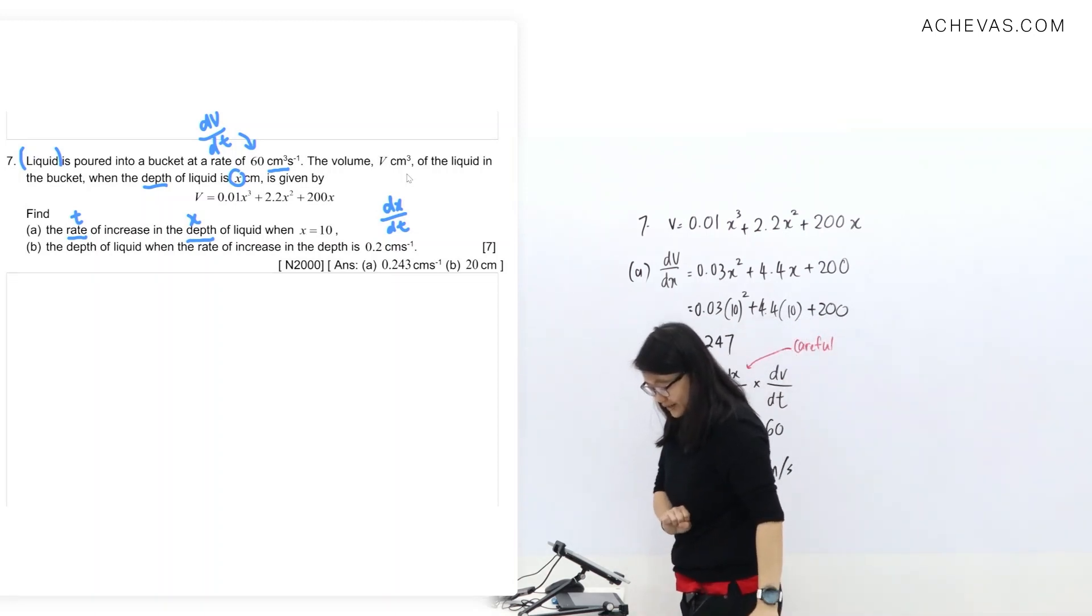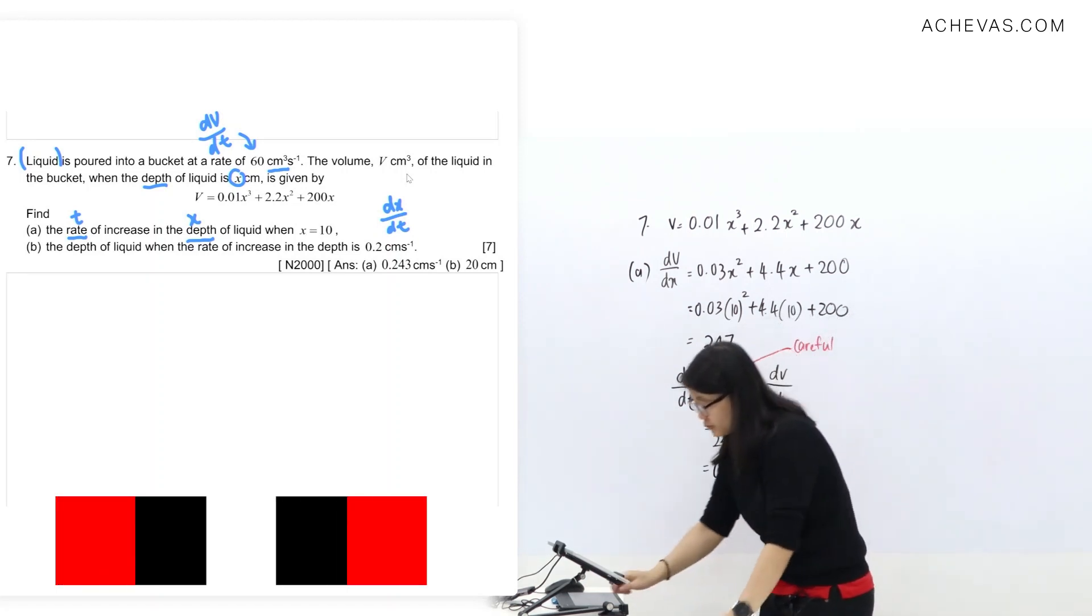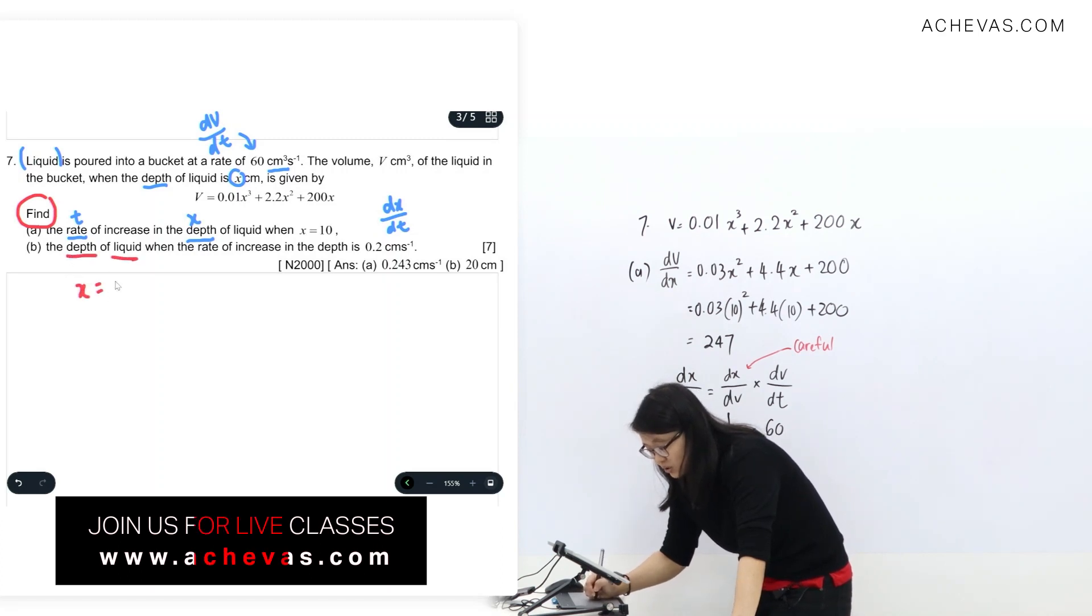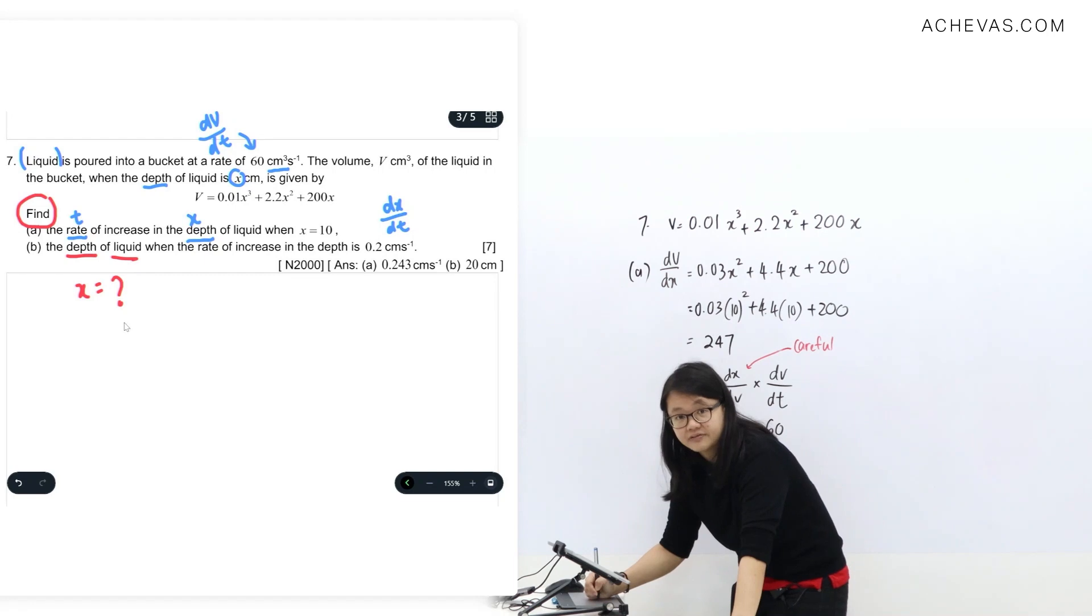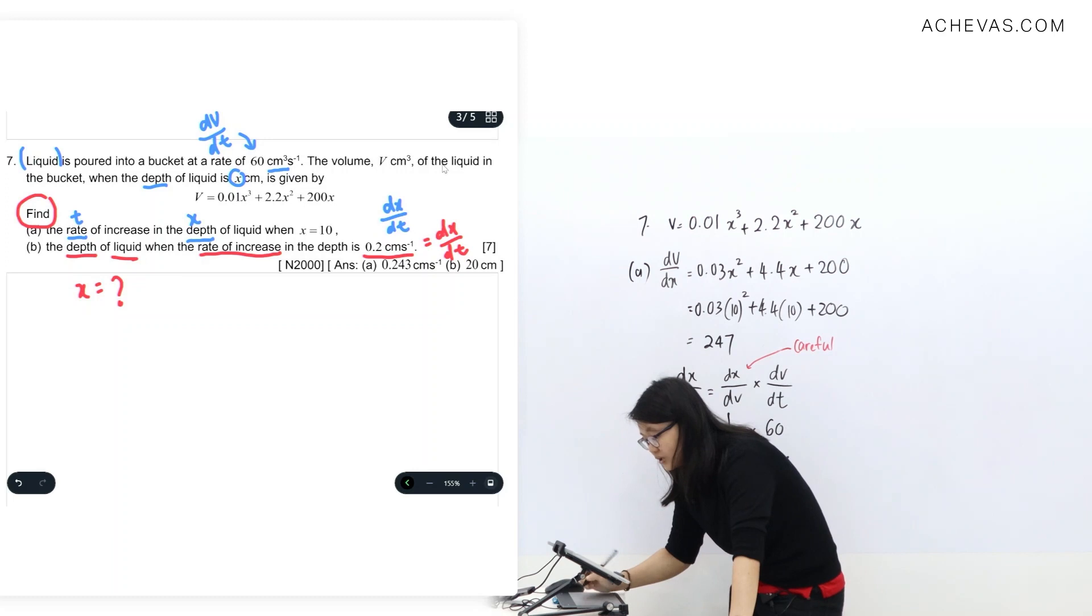Alright, good. We're done with question A. How about question B? Question B says: find the depth of liquid. I'm just going to use 'rate' for now. The 'find' word is up here. So find depth of liquid means x equals question mark. We are given the rate of increase, so the word 'increase' is good. So this 0.2 is the dx/dt. So now we know dx/dt, we are pending for x value.